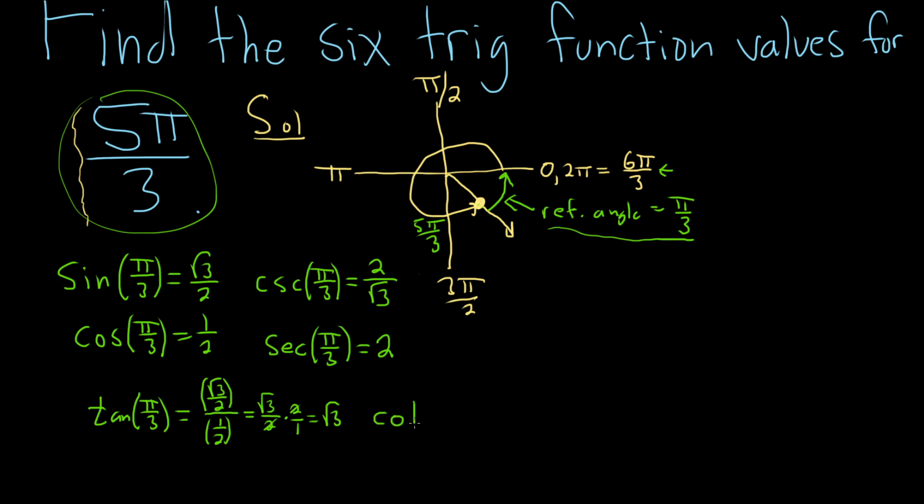This means that the cotangent of π/3, well, we just flip the tangent one, so that will be 1 over the square root of 3. Okay, so now we're ready to write the answers down.